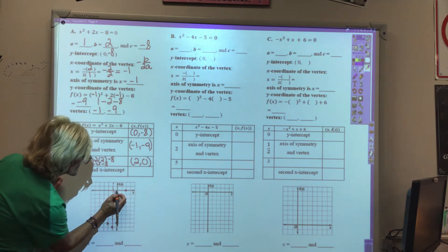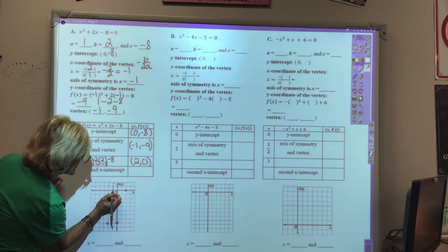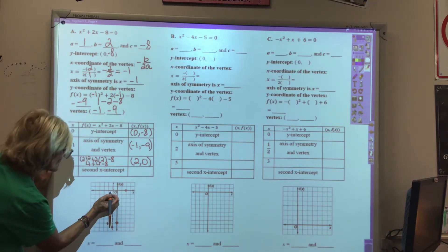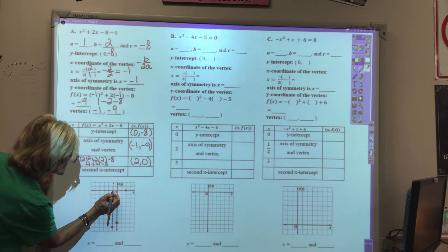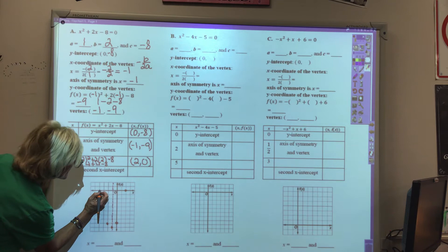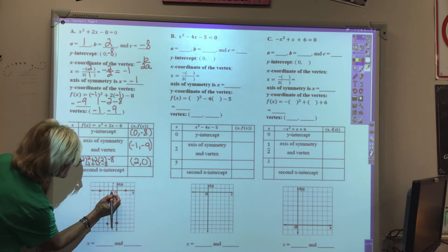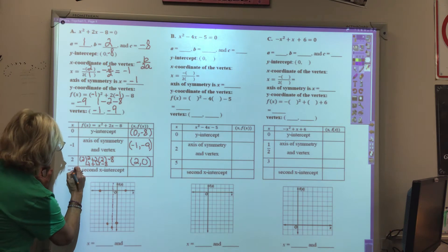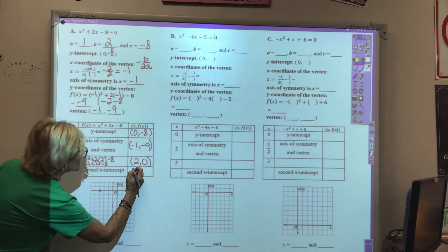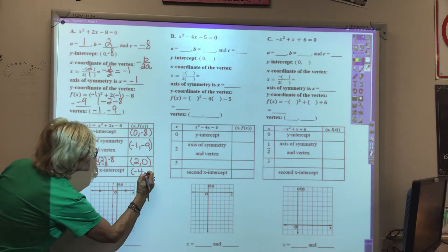That's 3 away from the axis of symmetry, so our other solution would be 3 away on the left side. That point is at negative 4, 0.